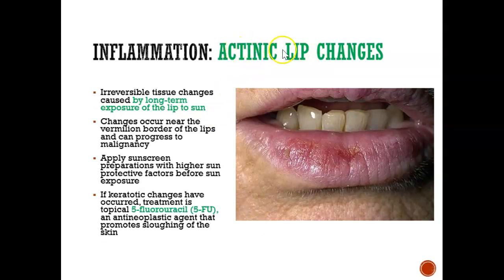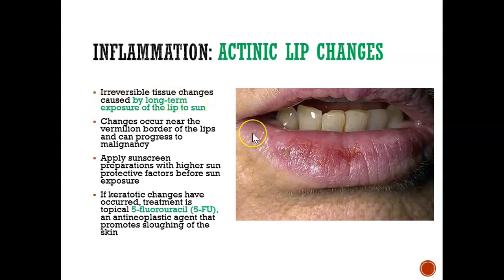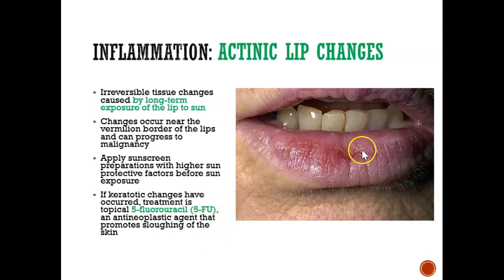Actinic lip changes occur when someone is out in the sun a lot and doesn't protect their lips with sunblock or lip balm. What happens is their lips get really crusted because of long-term exposure to the sun. To prevent it, we should always go out with lip balm that has sunscreen. There is a medication used to treat it called 5-fluorouracil, which promotes sloughing — it removes that extra crust or extra skin layers to make it more comfortable.